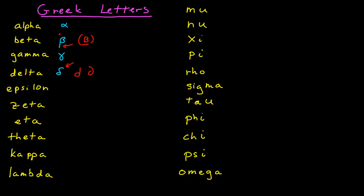For epsilon, I write it as something that looks like a C with a line in the middle, and that helps distinguish it from my E, which I make curved. Zeta doesn't look like anything — it just takes a long time to practice. I write a zeta with two separate motions: I come down a little curve at the top, then a big curve in the opposite direction, and then a third curve at the bottom. I don't think we'll have a zeta in this class; it's not used that often.